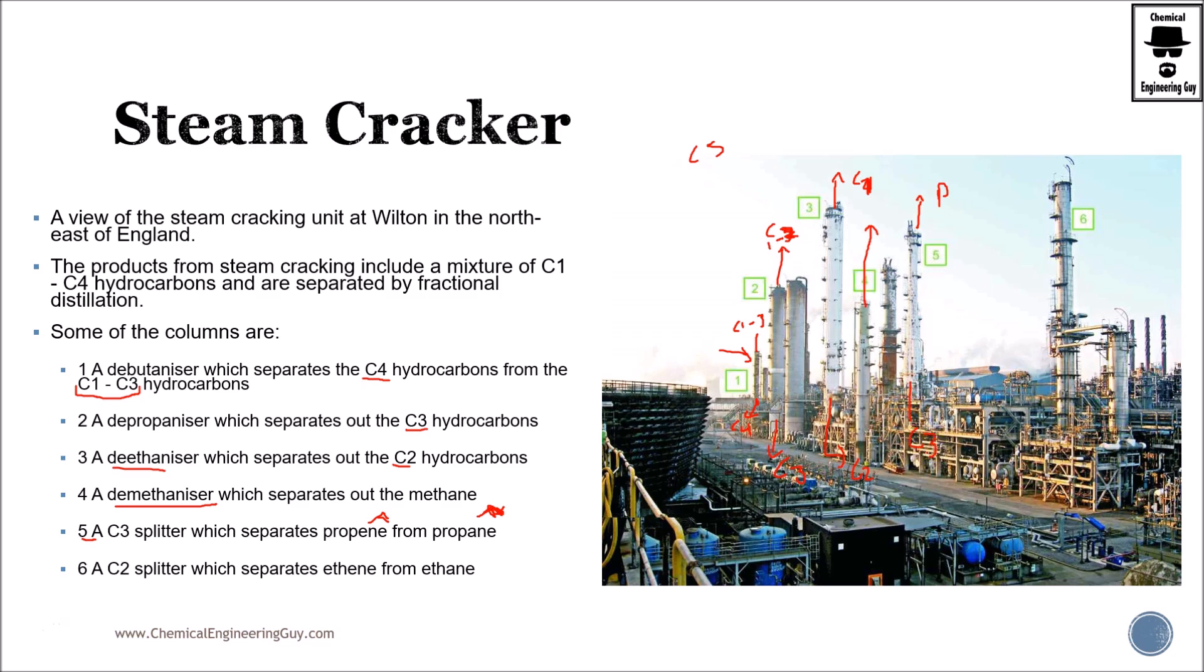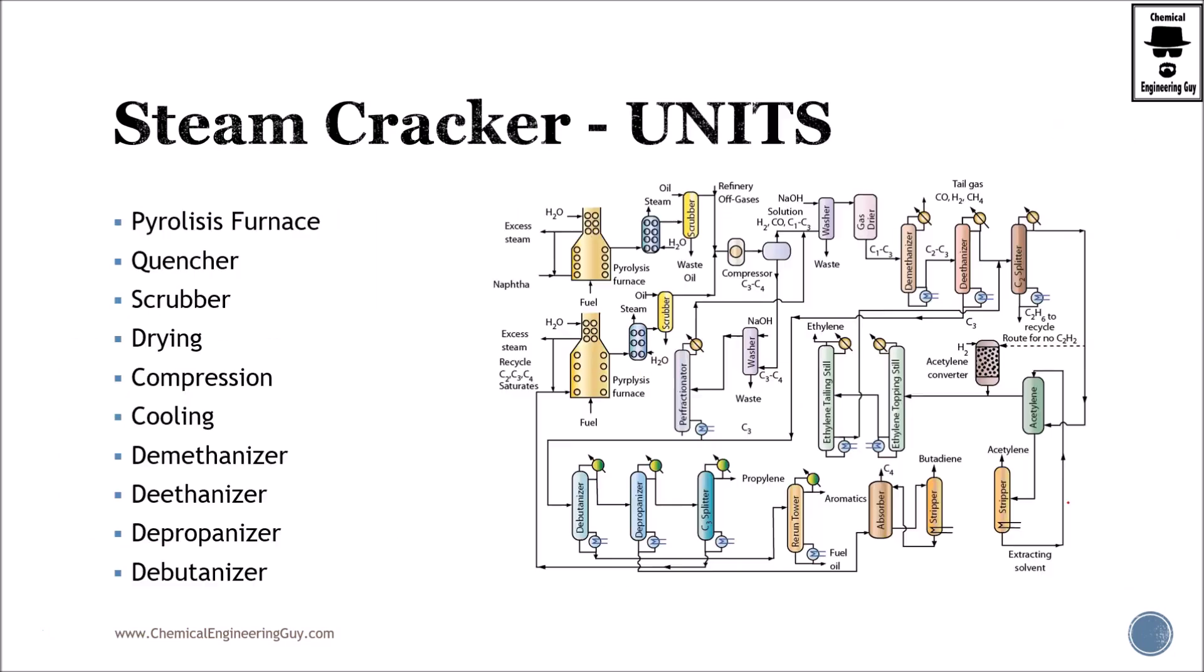Then six here is the C2 splitter. Remember that we gotta ensure that we separate the ethylene from the ethane. So this will have the double bonded carbons and this will be ethane. So you got the idea. We are going to have plenty of separations, especially between C1, C2, C3, and C4 materials, and these are the units.